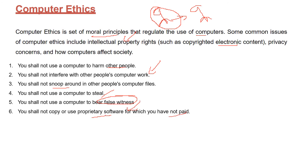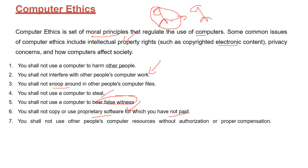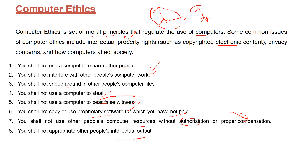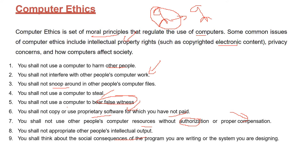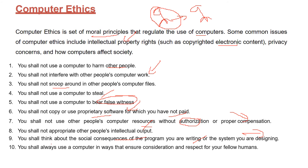Just pay and use. You shall not use another person's computer resources if they have not authorized you, you have not given compensation, or they have not given you permission. When someone has created something, take permission before using it. You shall not appropriate other people's intellectual output — this is IPR. You shall think about the social consequences of the programs you write and the systems you design, because they can affect the community. Always use a computer in a way that ensures consideration and respect for everyone.